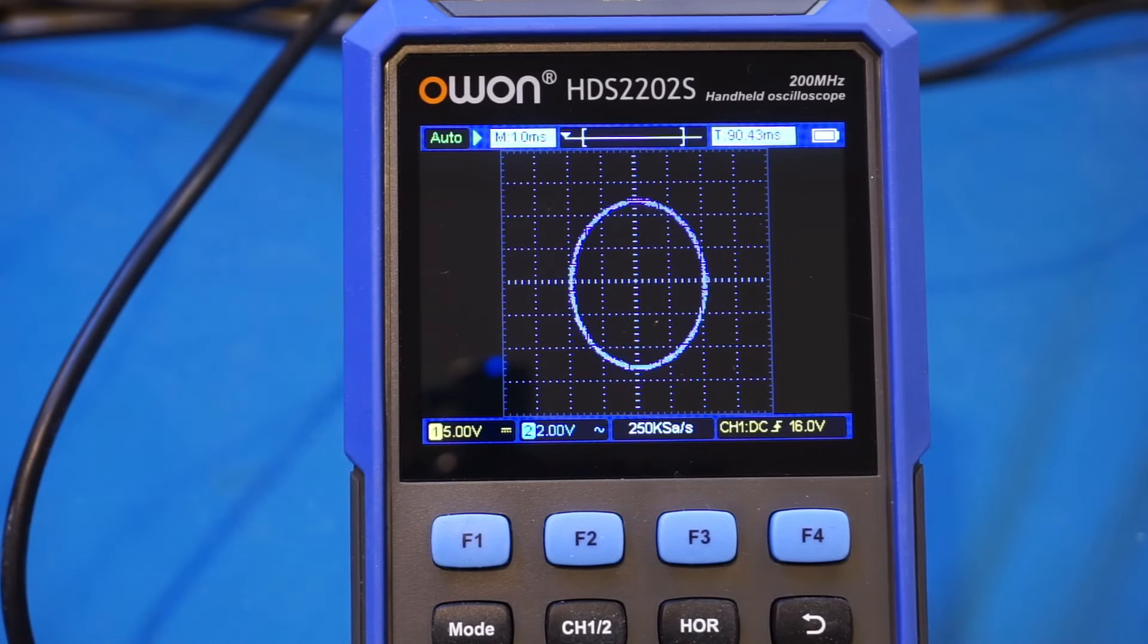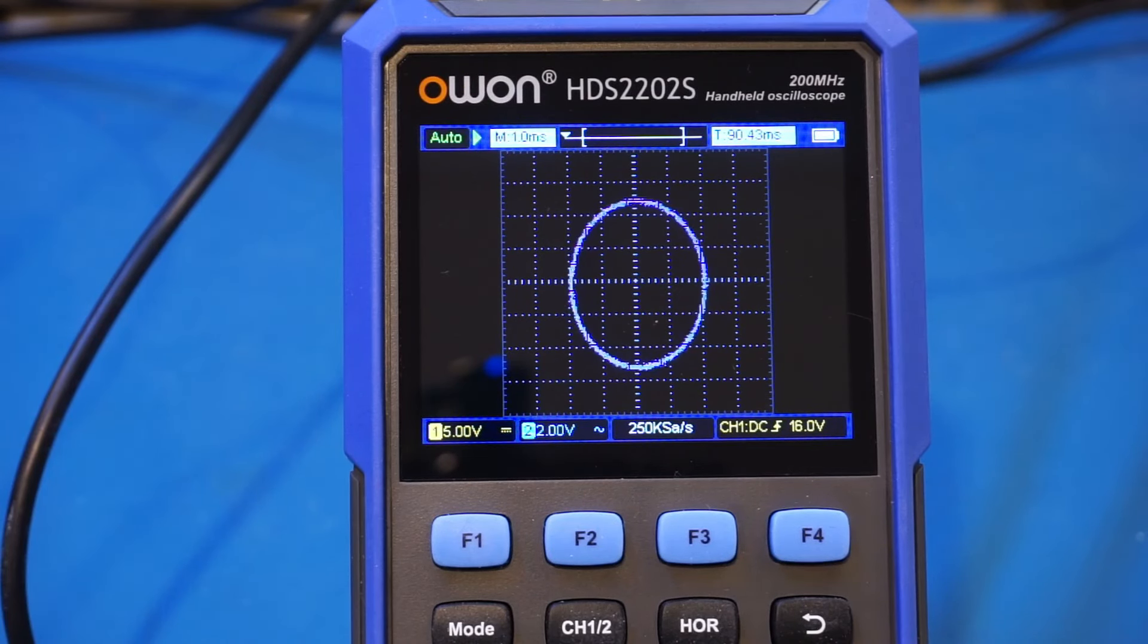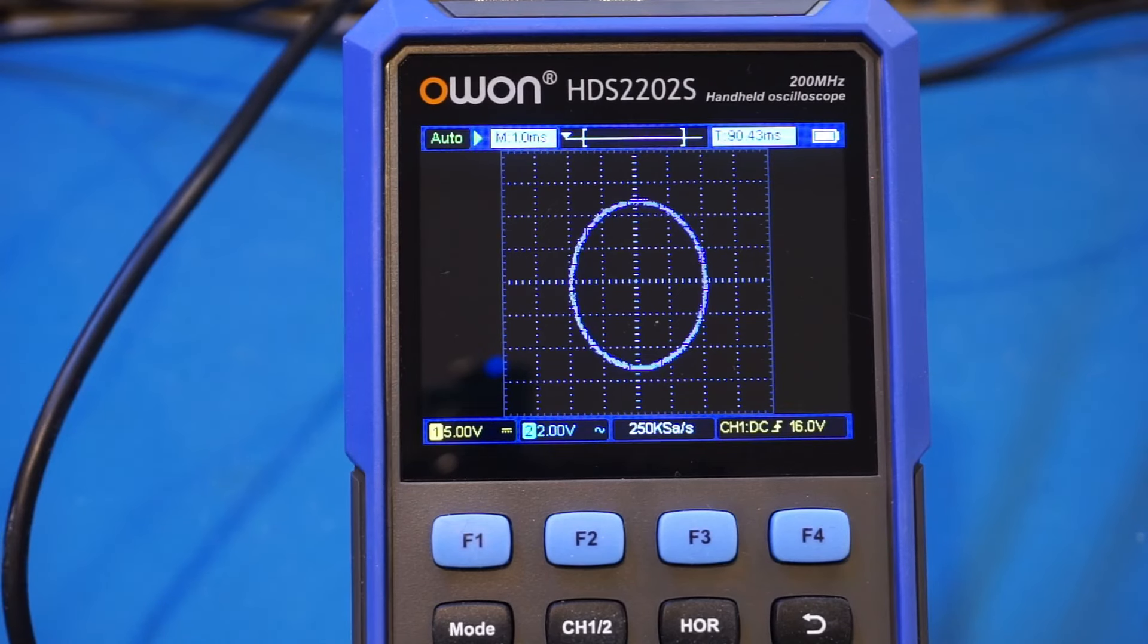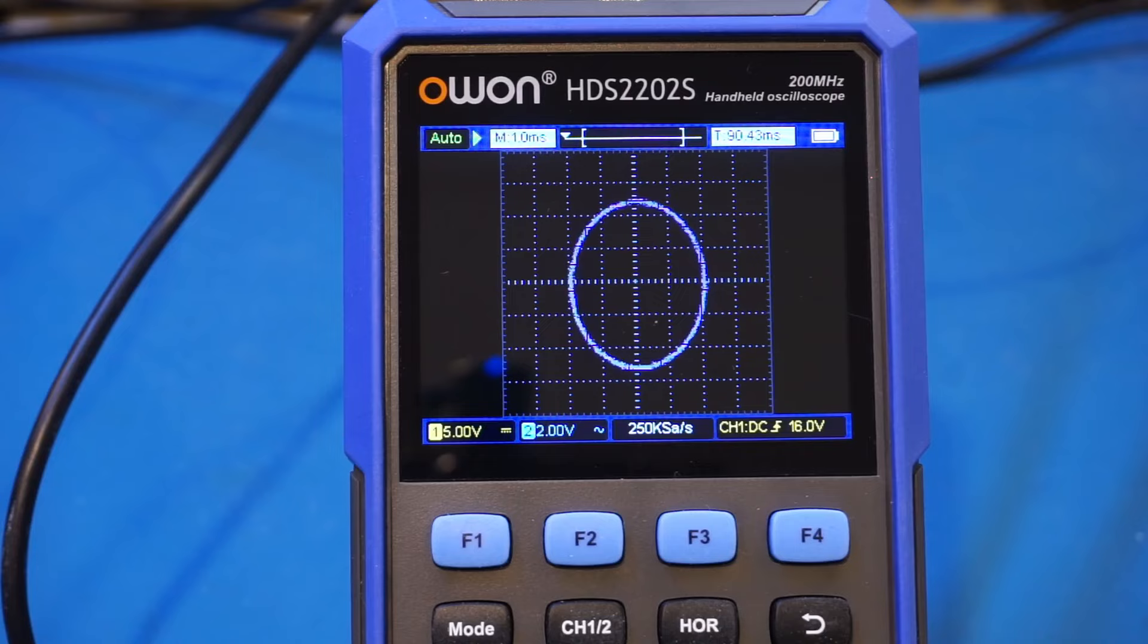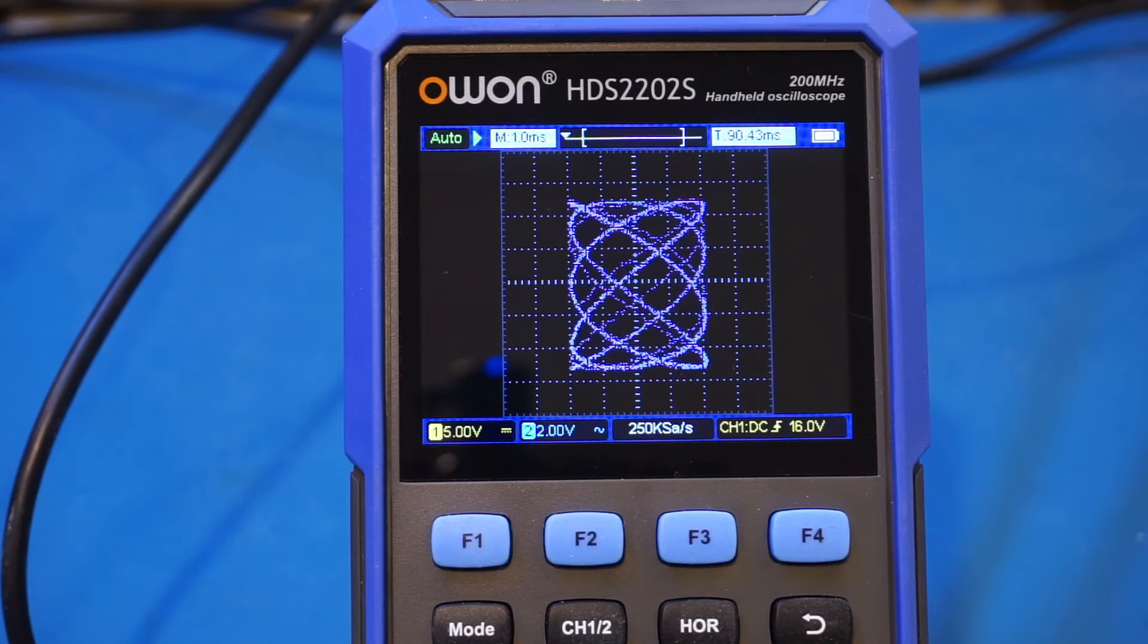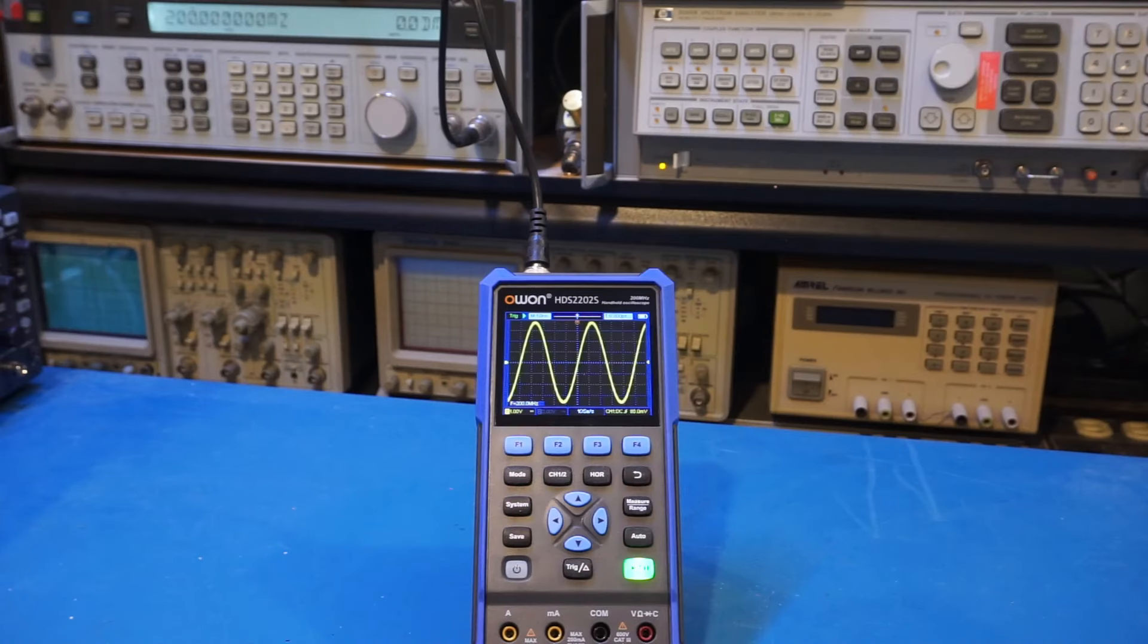Now let me demonstrate the Lissajous figure using XY mode. A lot of the digital scopes actually are having issues with displaying XY mode because of the refresh rate and also the waveform update rate. But for the HDS200 series, this is not a problem. We have demonstrated that with the 272 and 2102 reviews. But here I'm going to do it again. At the moment, we're inputting two 1 kHz sinusoidal signals. And I'm going to vary the input frequency of one of the signals here. You can see that we are picking up the Lissajous figure with no problem at all.